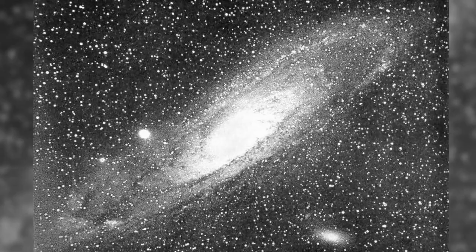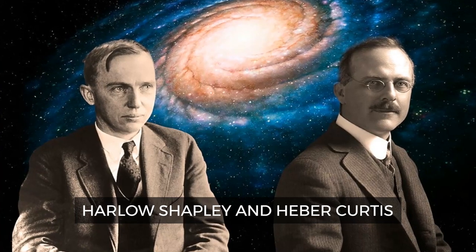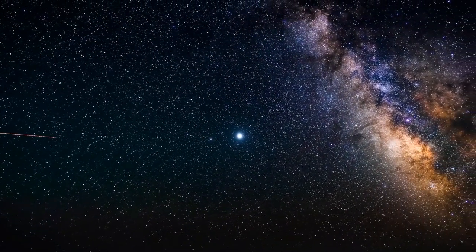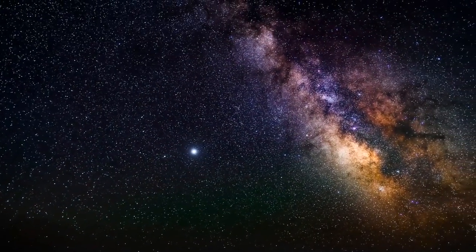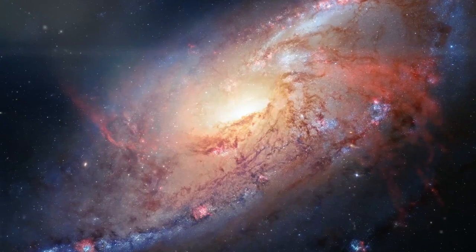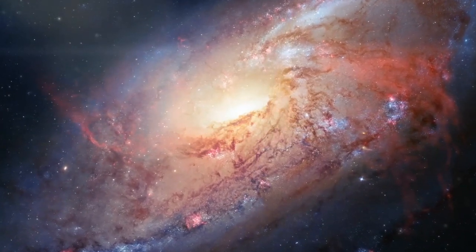The first photographs of Andromeda were taken in 1887 by Isaac Roberts. In the 1920s, the distant galaxy became part of the great debate between American astronomers Harlow Shapley and Heber Curtis. At the time, astronomers thought the Milky Way composed the whole universe, and the strange patches known as nebulae lay inside of them. Curtis had spotted various novae in Andromeda and argued instead that it was a separate galaxy.